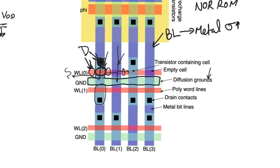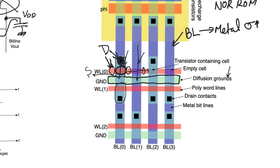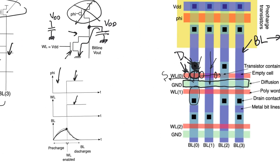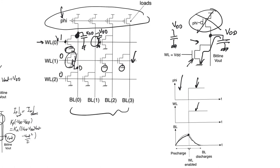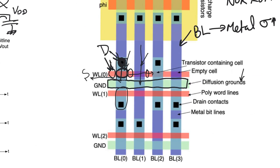The ground strips are implemented in diffusion rather than metal — an exception to the general rule — for density reasons: NMOS sources contact ground directly in diffusion, avoiding the need for contacts and vias. The penalty is that diffusion has very high resistivity, but since ground carries no signal, delay is not a concern, though resistive bounces on ground must still be watched.